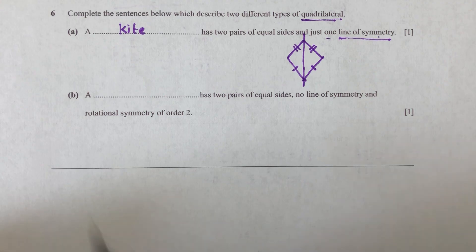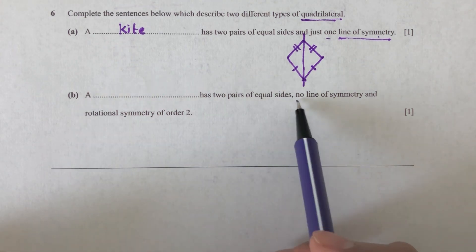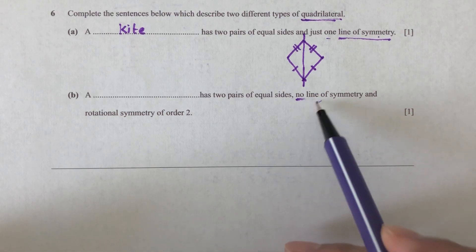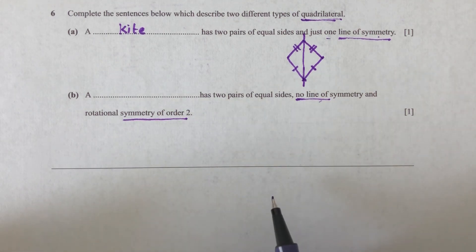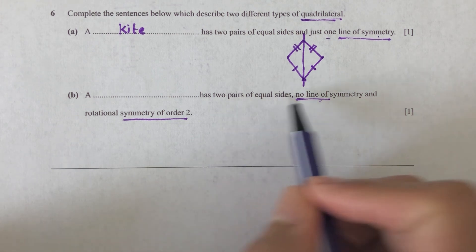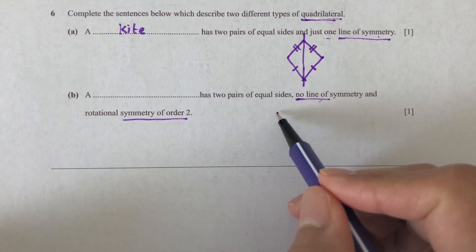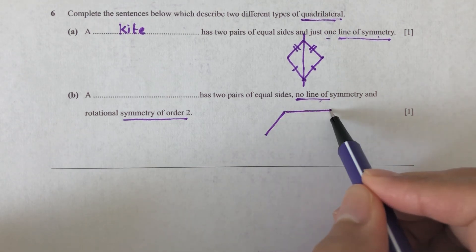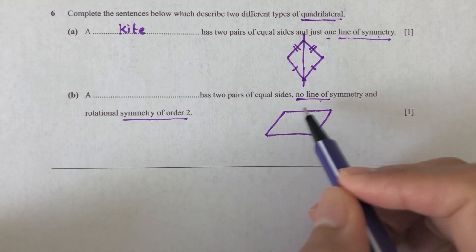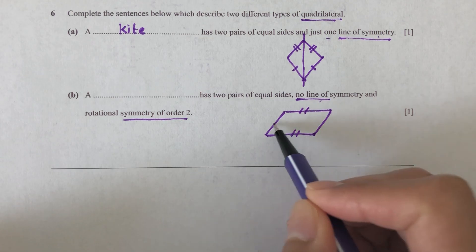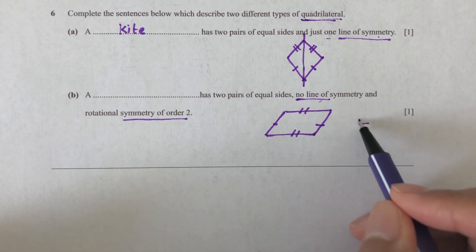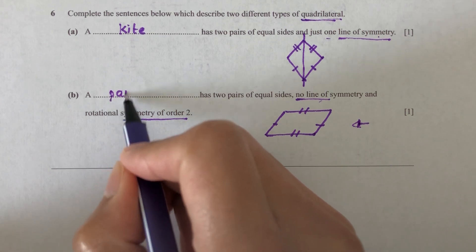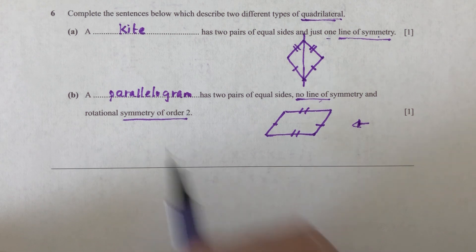So now we move on to part B. A has two pairs of equal sides, no line of symmetry, has no line of symmetry and has a rotational symmetry of order two. This is pretty obvious because if we take a rectangle, they have two pairs of equal sides, but they have two lines of symmetry. So it can only be, by elimination, we find that it can only be a parallelogram for this diagram. So it has two pairs of equal sides and then has a rotational symmetry of order two. So if we rotate this by 180, it becomes the same.